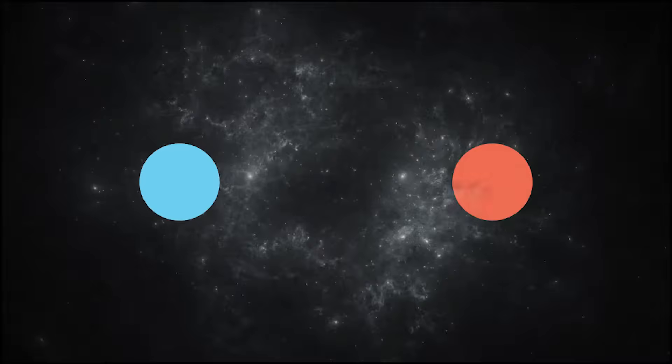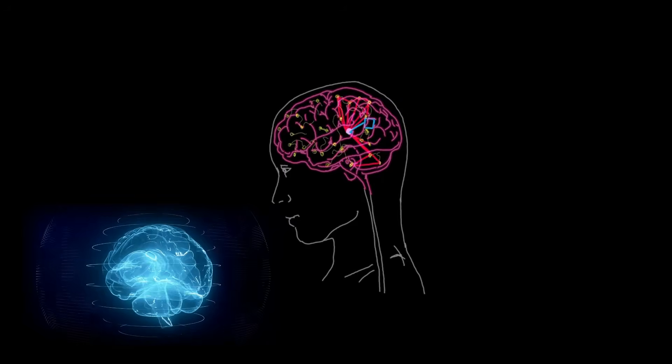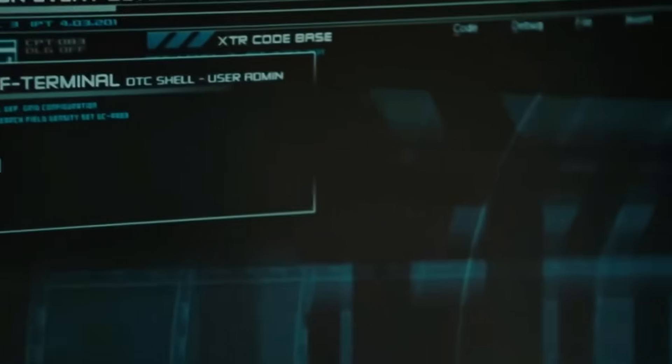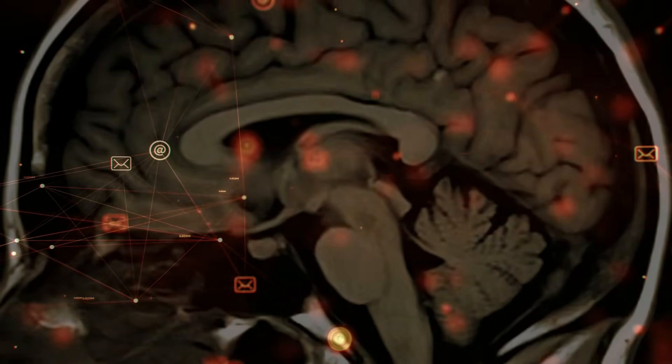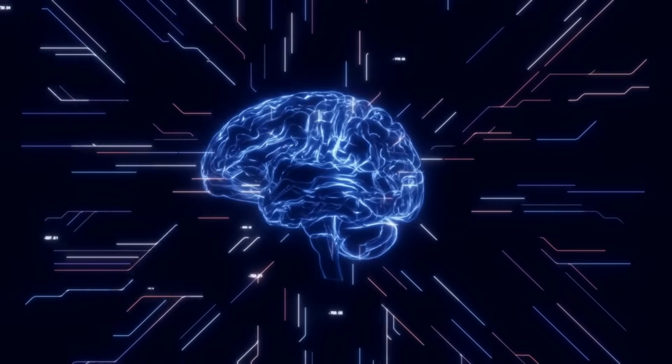This kind of entanglement could explain why sometimes, without any obvious communication, two people can seem to think alike or feel connected on a deep, inexplicable level. Although these observations are still in the early stages of validation, the possibility of a quantum mechanism in the brain is hard to ignore.